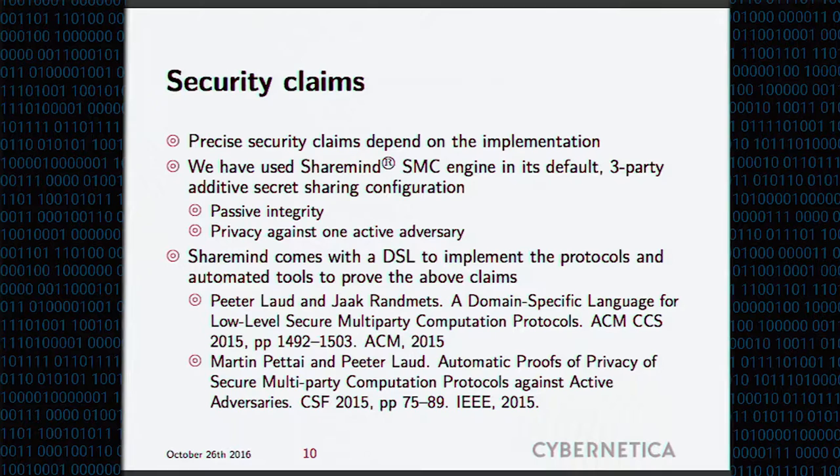The security claims depend on which basic domain you will choose. If you choose fully homomorphic encryption, you get one sort of security claims. We have been using ShareMind secure multiparty computation engine in its default three-party additive secret sharing configuration, which is a semi-honest setting, but you still get privacy against one active adversary. I claim that we had this result last year in the paper published on CSF 2015. Essentially, we also prove that what ShareMind-like setups achieve is actually more than just semi-honest behavior. We also get the active security with respect to privacy.